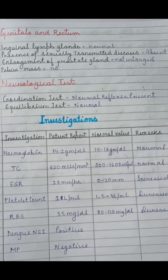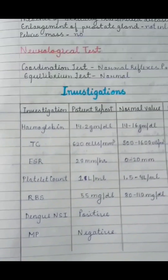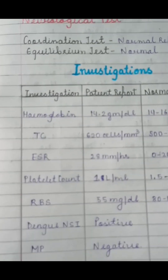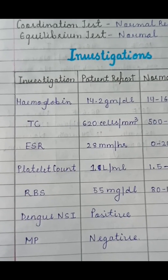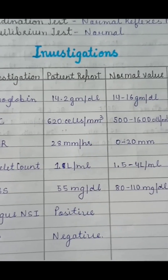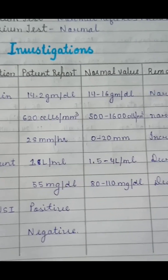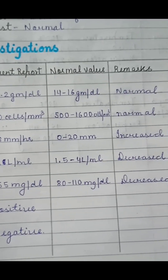Then investigations are done. In dengue, you can see that platelet count has decreased, RBS has decreased, and ESR has increased.